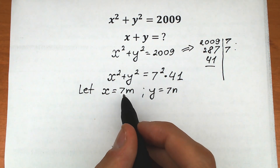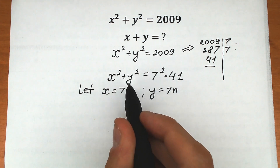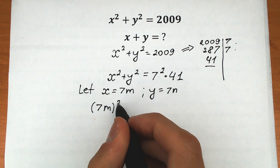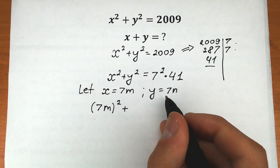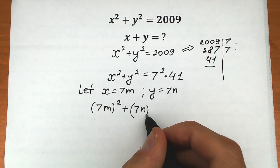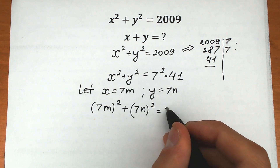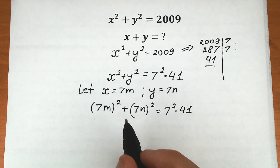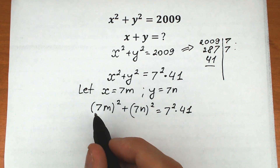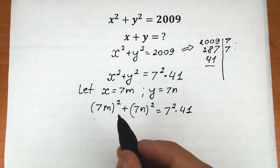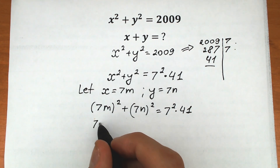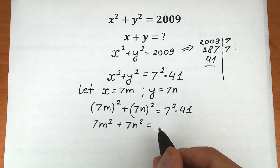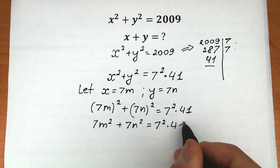So instead of x we plug in 7m, and instead of y we plug in 7n. We get (7m)² + (7n)² = 7² × 41. We raise 7 to the power of 2 and m to the power of 2, giving us 7²m² + 7²n² = 7² × 41.